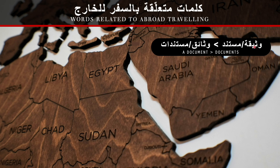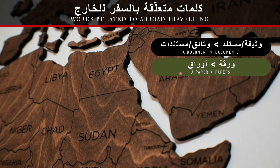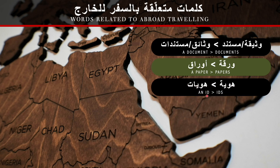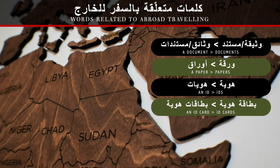A document: وثيقة or مستند. The plural: وثائق or مستندات. A paper: ورقة — pronounced ورقة in Saudi dialect, ورقة in Egyptian and Levantine dialects. The plural: أوراق. An ID card: بطاقة هوية. The plural: بطاقات هوية.